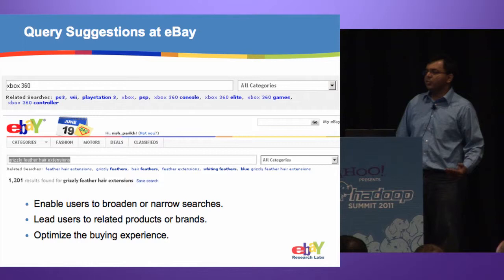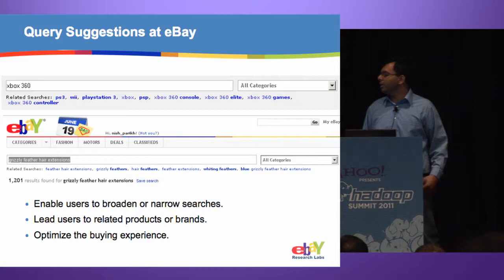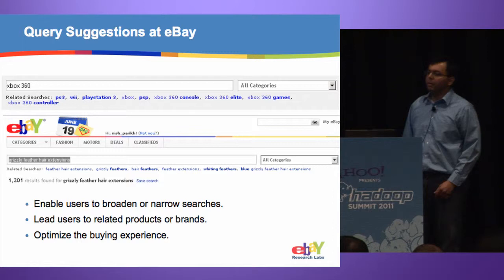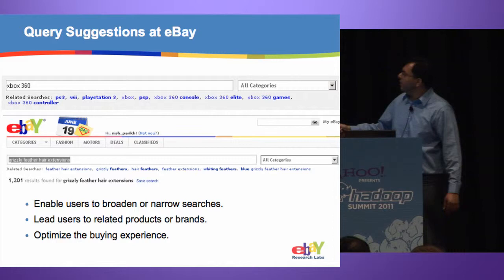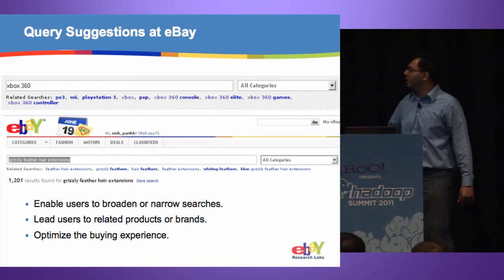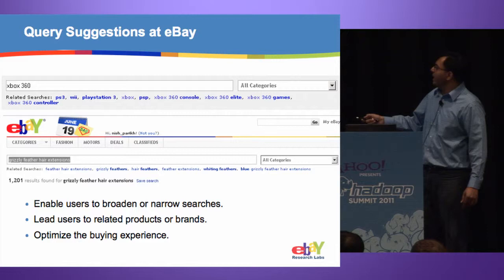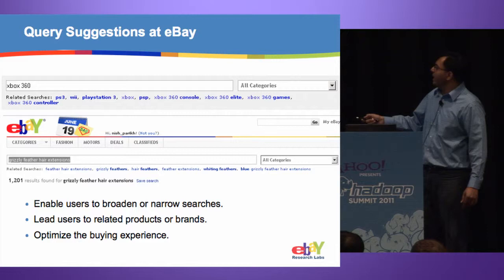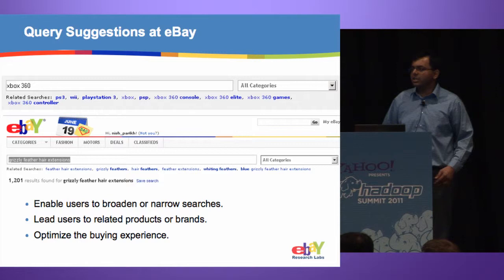On a marketplace like eBay, the vocabulary between sellers and buyers is very different. If buyers don't use the right terminology, they may miss out on finding the right inventory, and this feature helps bridge that gap. By clicking on related searches, a user's path to success is shortened. For example, a user looking for 'grizzly feather hair extensions' gets around 1,200 items, but query suggestions like 'whiting feathers' serve as exploratory recommendations the user may never have thought to try.